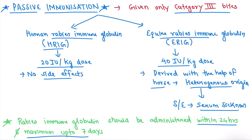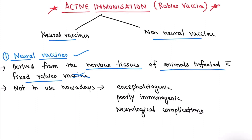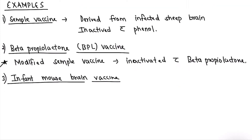Now coming to active immunization — the rabies vaccine. There are two types: neural vaccines and non-neural vaccines. Neural vaccines are derived from the nervous tissue of animals infected with fixed rabies virus. They are not used nowadays because they are encephalitogenic, poorly immunogenic, and cause neurological complications.